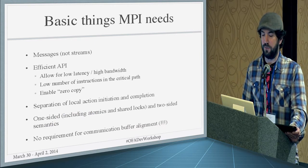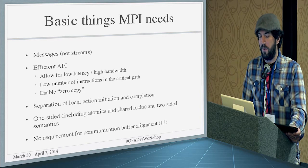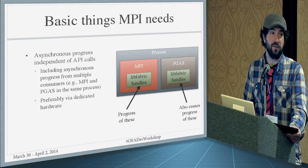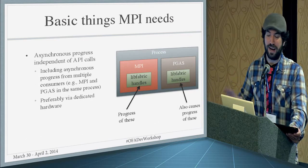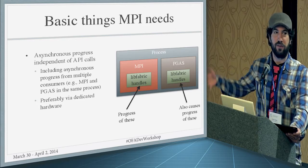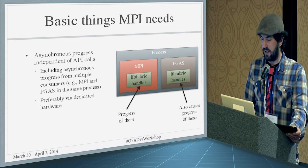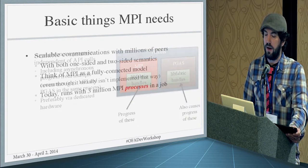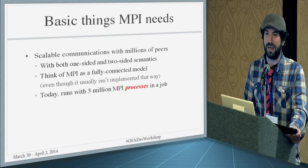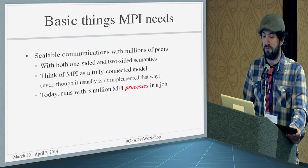Some of the things we need: we deal in messages, not streams. We want an efficient API, one-sided semantics, separation of local initiation, and asynchronous progress. We're not sure exactly what that looks like yet — it would be nice if you have a PGAS and an MPI, and you progress the PGAS handles, that the MPI handles get progressed as well. We need scalable communication with millions of peers. Right now MPI is already running 3 million MPI processes for a job, and the best way to think of it is a fully connected model.